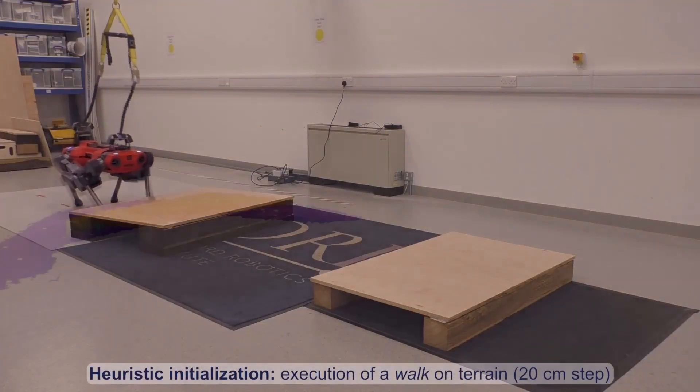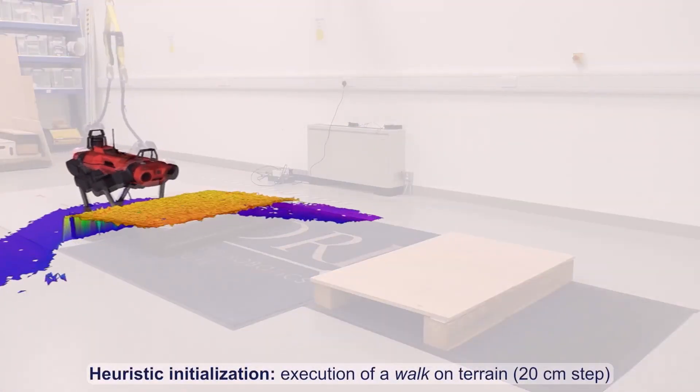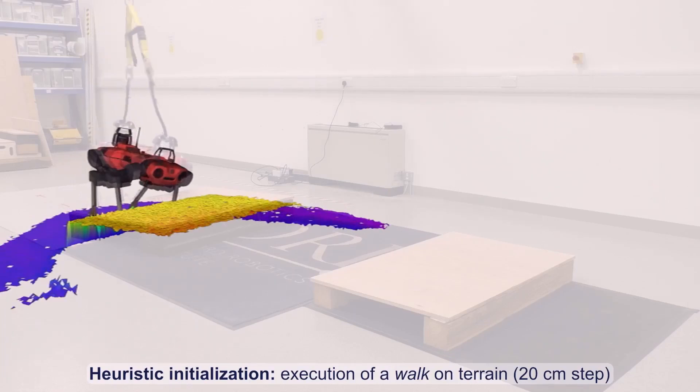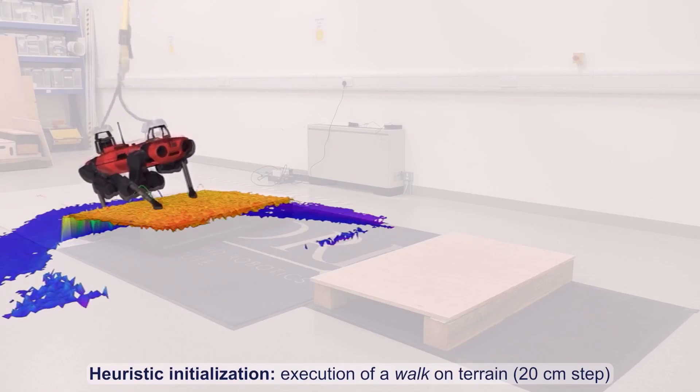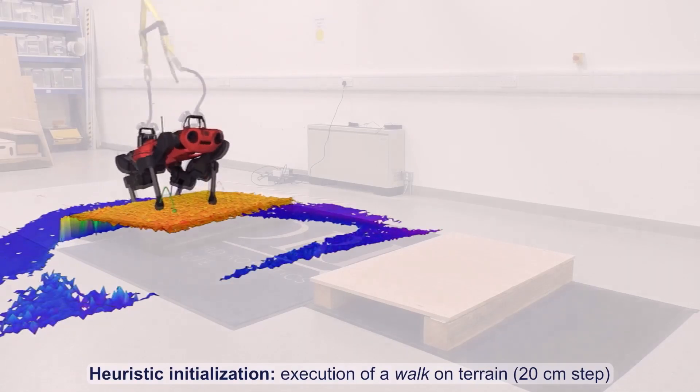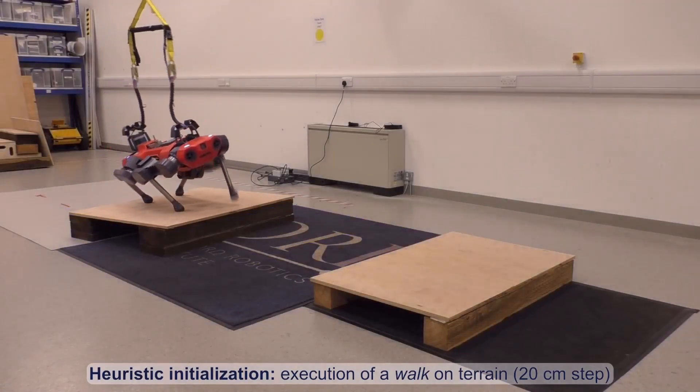The onboard system allowed us to cross up to 20 cm high steps. Because we are exploring a large state space, the planner can produce unwanted behaviors, which we are working on improving.